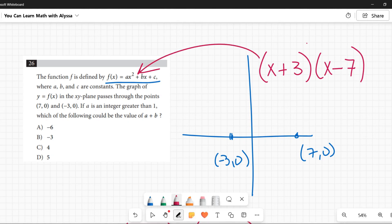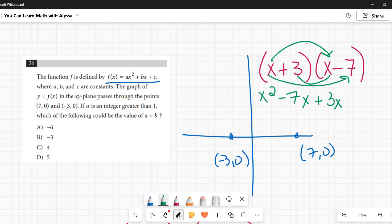Now I want to get this into a form of ax² + bx + c, so I'm going to distribute it. So x times x is x², x times -7 is -7x, 3 times x is 3x, and 3 times -7 is -21. I'm going to combine those in the middle.